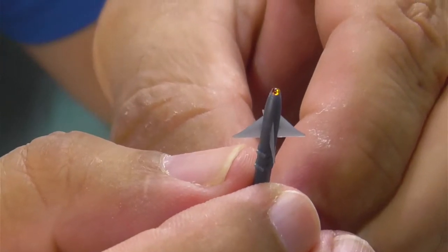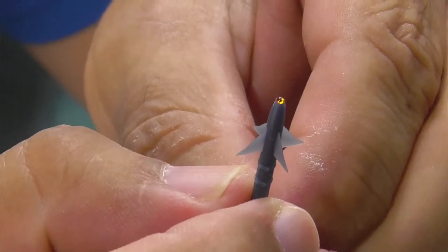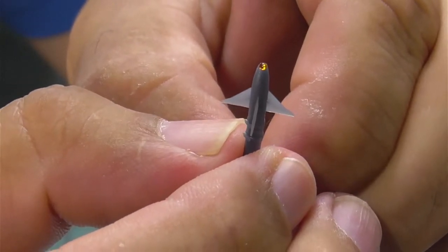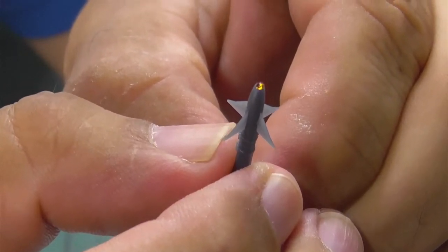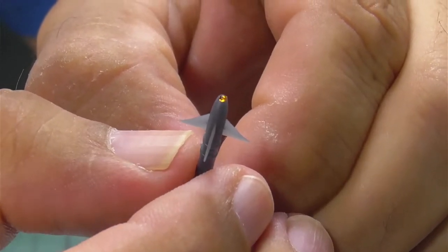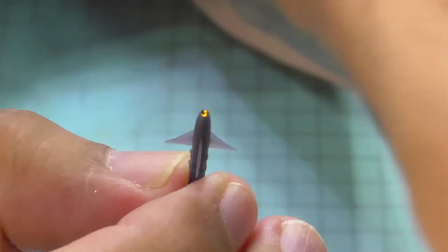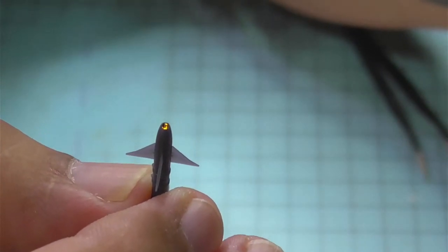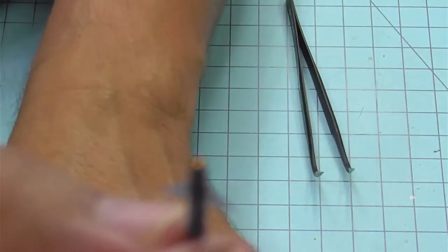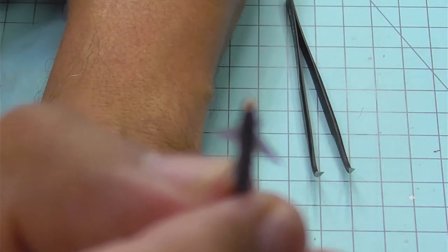Keep in mind that this is not glued on, so it's not perfect, but it just so happens that the depression that Richard designed into the tip of the guidance and control section holds the 0.052 or 1-point millimeter lens perfectly.